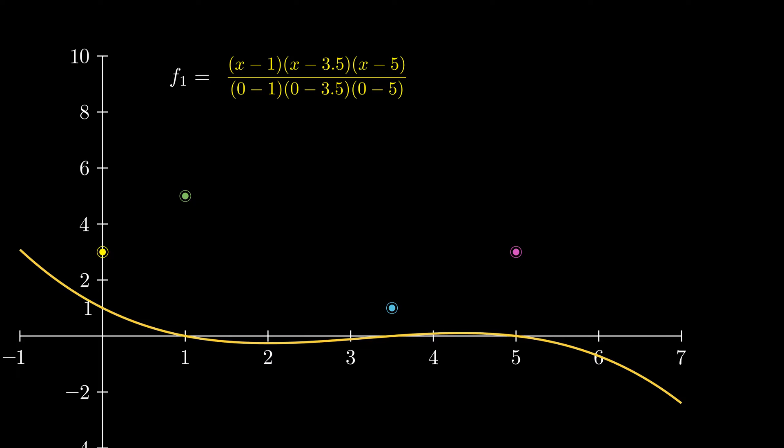Note it still does not pass through the given point, but we just need to multiply by the required y value, which is three in our case, to fix it. So till now we have tailored one function that passes through the given point and is zero at all other points.